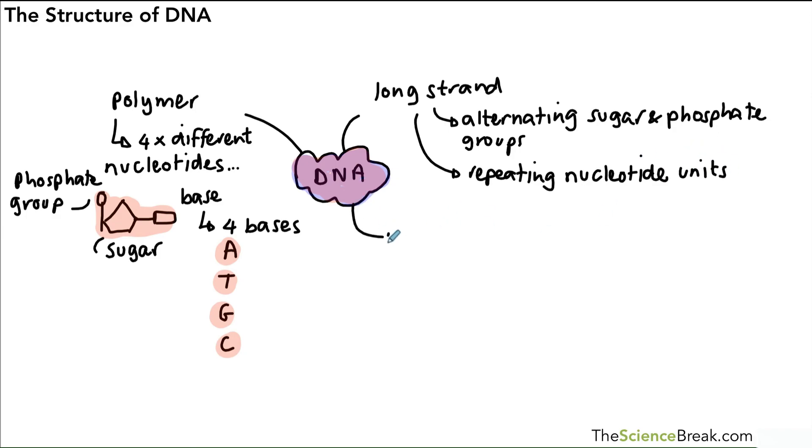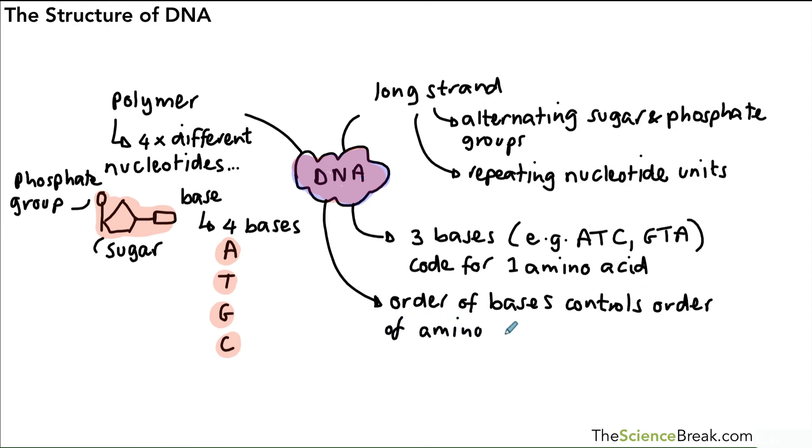We said that three bases, for example ATC or GTA, code for one amino acid. Remember, there's 20 amino acids that the body works with. And the order of bases in the DNA controls the order in which the amino acids are put together.